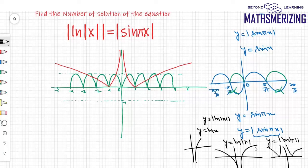So these two graphs are intersecting at 1, 2, 3, 4, 5, 6, 7, 8, 9, and 10 points. So the number of solutions to this equation is 10.